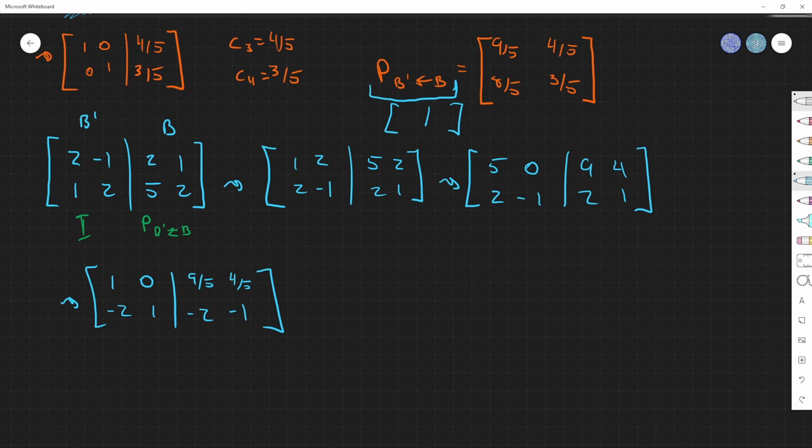As you can see here, we're already starting to get the formation. 9 fifths, 4 fifths. That's what we had in the answer. And then lastly, which is multiplied by 2. That would be 9 fifths, 4 fifths. This would be 0. This would be 1. And then this would be 18 minus 10. 8 fifths. And then this would be 8 minus 5, which would be 3 fifths.